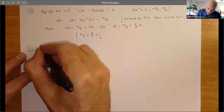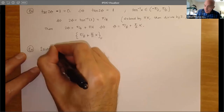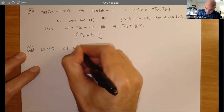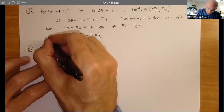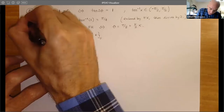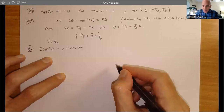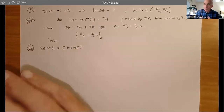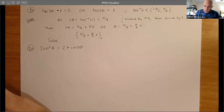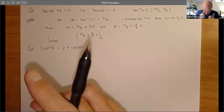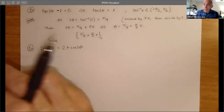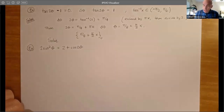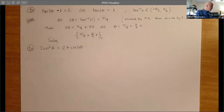Now let's look at another one: 2sin²θ = 2 + cos(2θ). We want all solutions, so: solve. Now when you look at this — it's like we had one variable, but here we've got sin²θ and cos(2θ). We can't really apply the algebra very well with different trig functions running around. This is what I said before: algebra and identities. We're thinking we've got a nice configuration for the double angle, using the identities from last class.